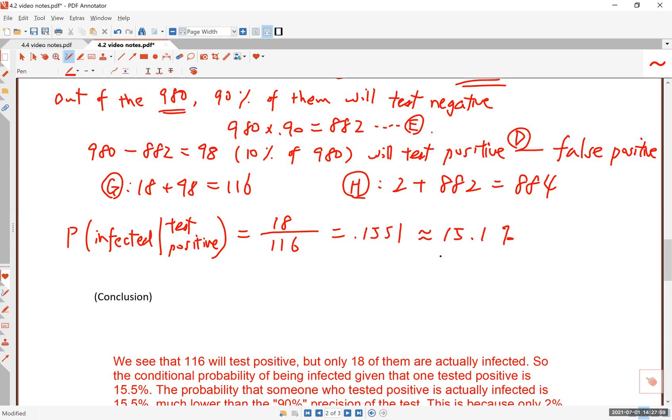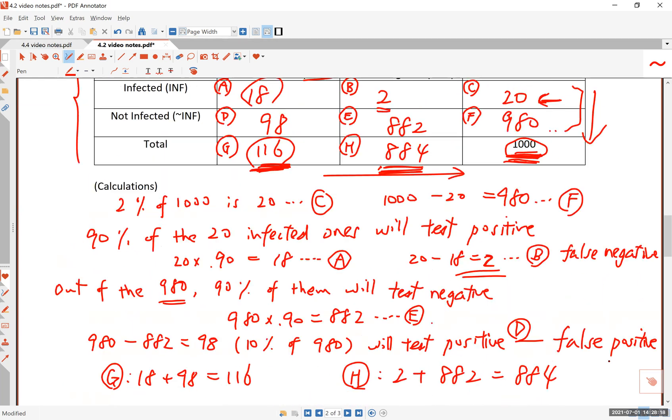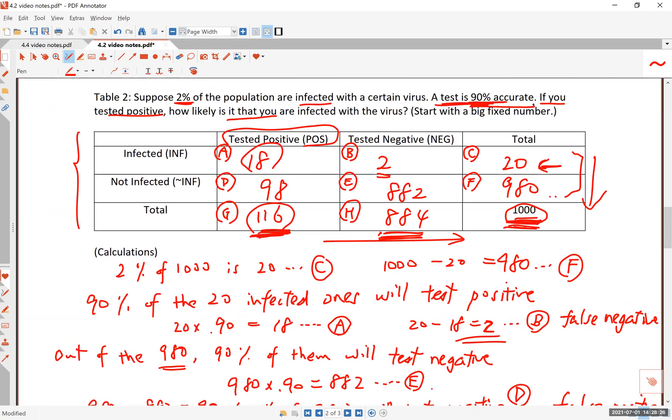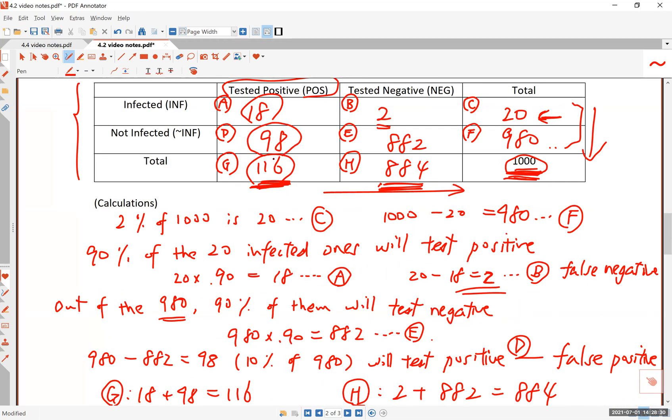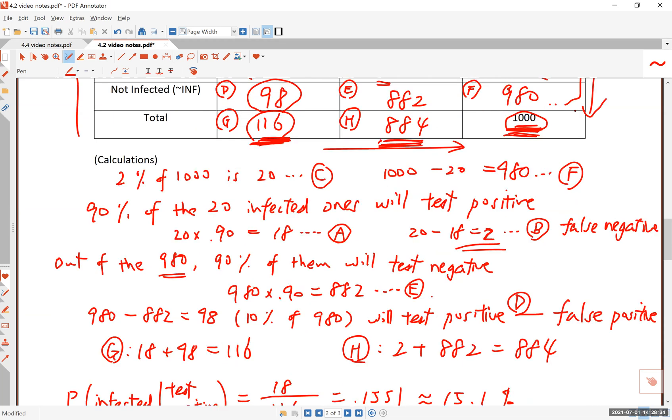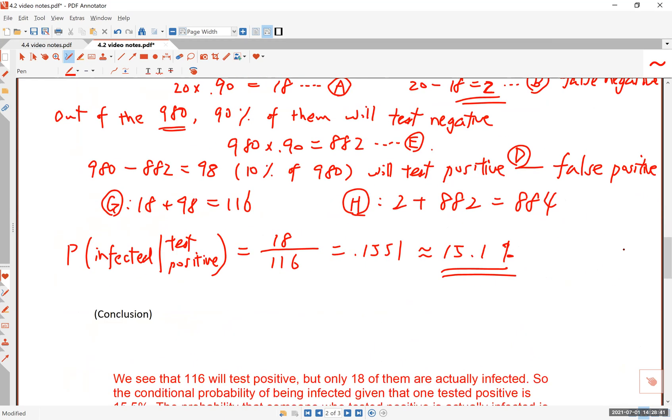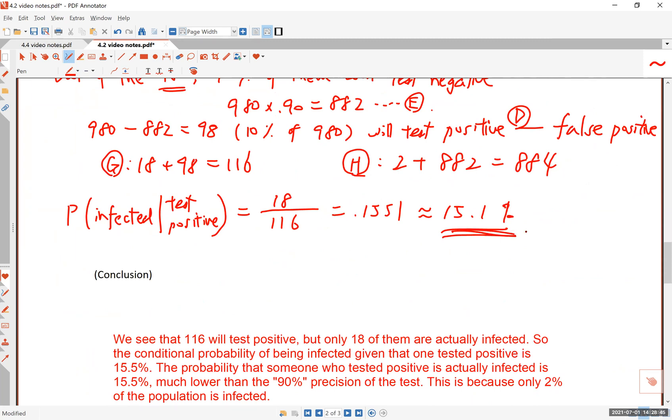This number is 0.155, approximately 15.5%. Do you see the significance of this? When the virus infection is kind of rare, only 2% of the people who take the test are actually infected, that's very lopsided, 2 to 98. In that kind of situation, even an accurate test is going to create a lot of false positives. So even if you tested positive, because many of those people who tested positive are false positives, the probability that you actually are infected is rather low.